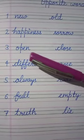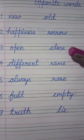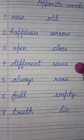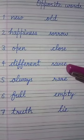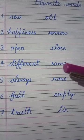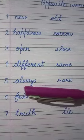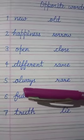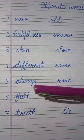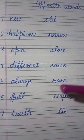Open — like 'open the door' — and its opposite will be 'close'. Different — its opposite is 'same'. Different means alag alag, and same means ek jaisa. Always — the thing that is going daily, means always.